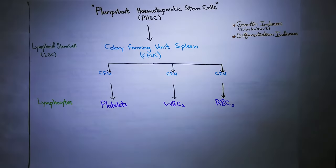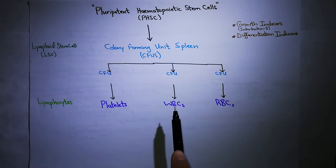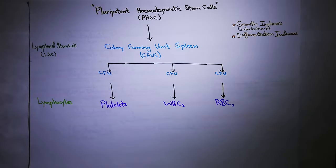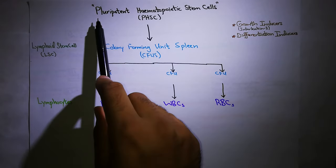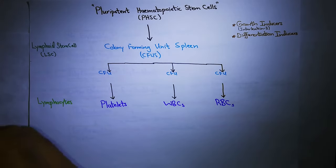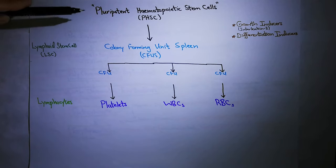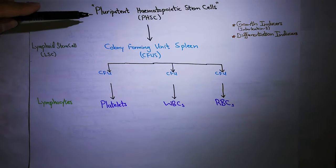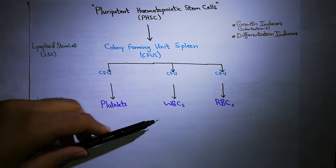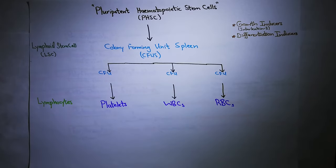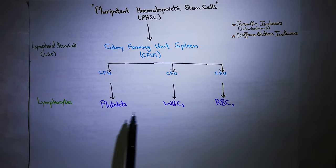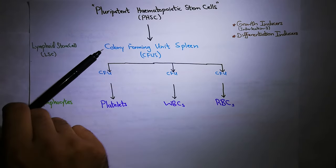Now, bone marrow produces RBCs, WBCs, platelets, and lymphocytes. All of these originate from pluripotent hematopoietic stem cells. These pluripotent hematopoietic stem cells grow and differentiate into colony forming units, which then give rise to RBCs, WBCs, and platelets.